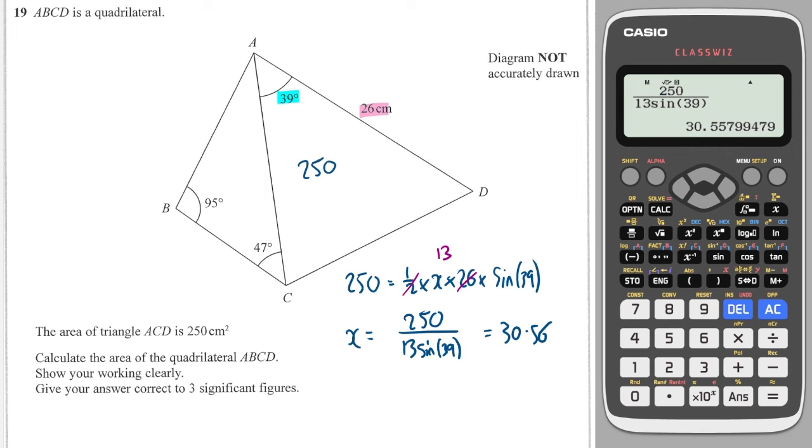So that's my value for x, 30.56. And I need to work out the area of the quadrilateral. Well at the moment on the left side I've only got one side, I need two sides.